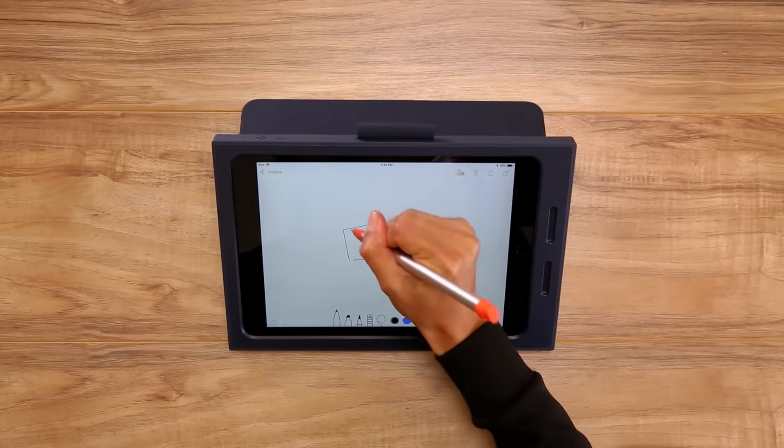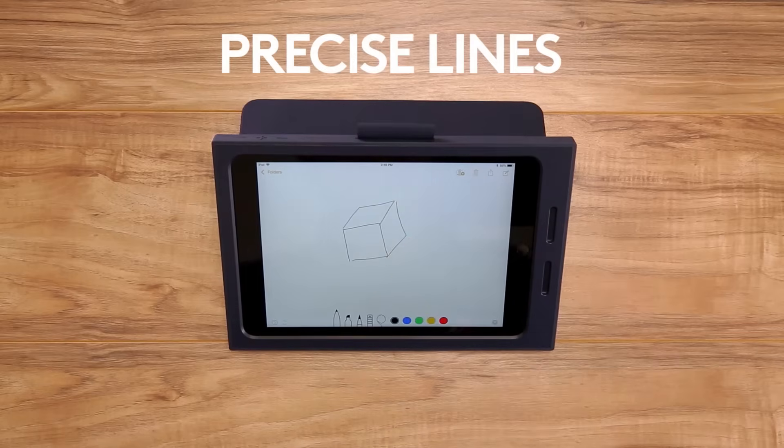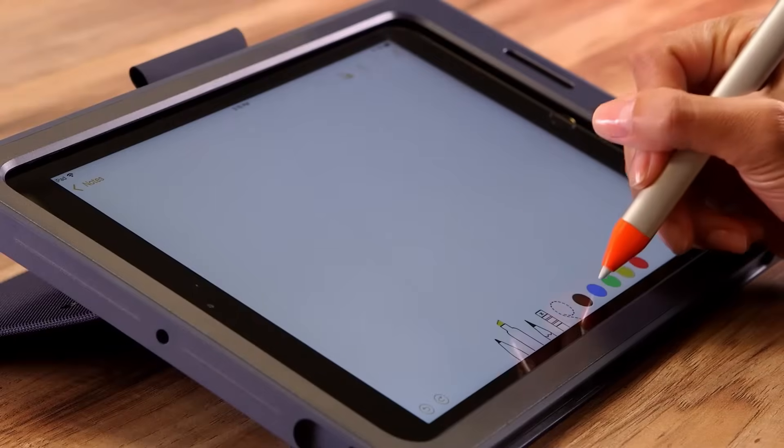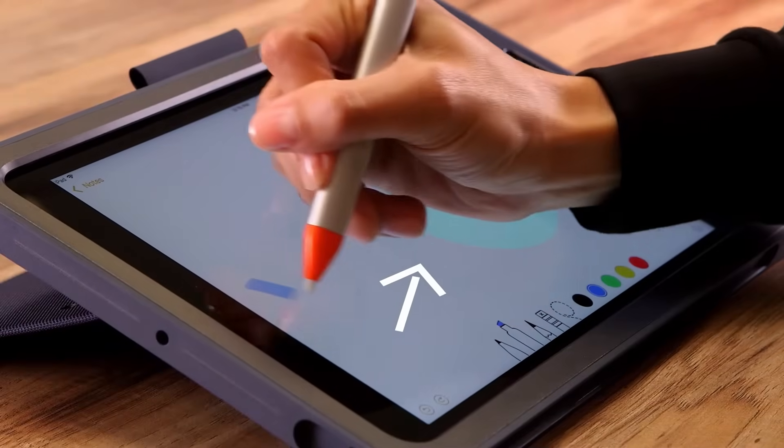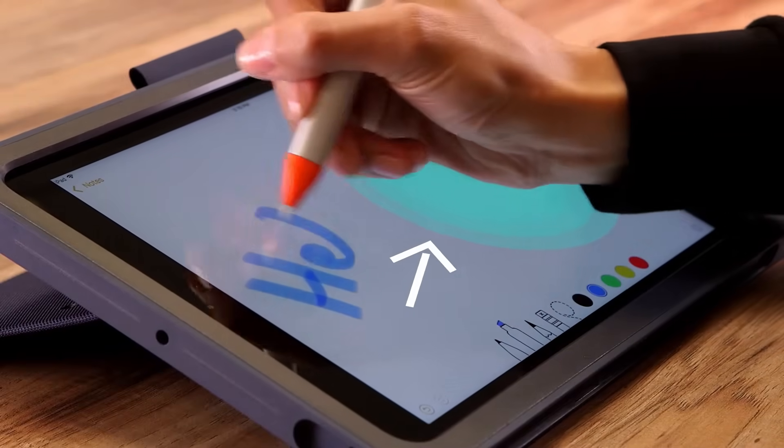Logitech Crayon gives you precise lines, perfect for drawing or writing. iPad has palm rejection technology, so you can rest your palm on the screen and write as you would normally.